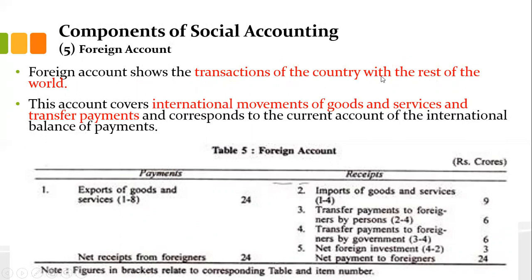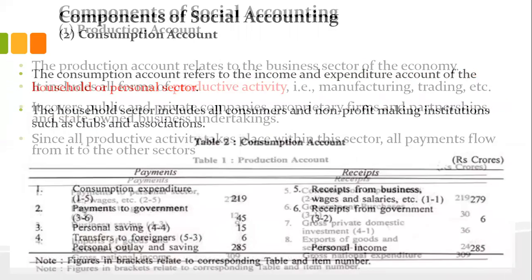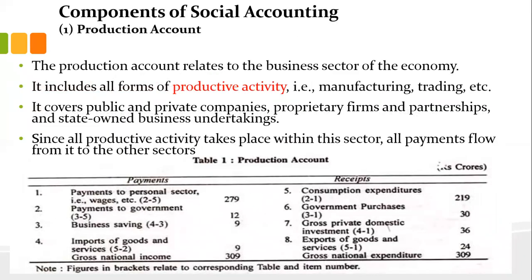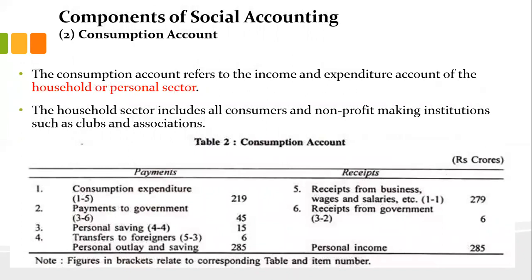The fifth and last component is the foreign account, which shows a country's transactions with the rest of the world. It includes exports of goods and services, imports of goods and services, transfer payments to foreigners by persons, transfer payments to foreigners by government, and net foreign investment. What goes out and what comes in should be recorded here. This account can be balanced or imbalanced — it is not always in balance.